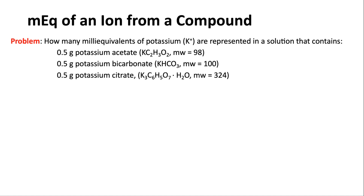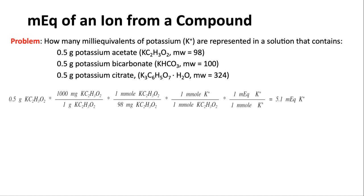Next question involves multiple compounds. How many milliequivalents of potassium are in a solution containing all three of the following: 0.5 g potassium acetate, 0.5 g potassium bicarbonate, and 0.5 g potassium citrate? Notice all three have the same starting weight — will they provide the same milliequivalents? The answer is no, because they differ in molecular weight and in the number of potassium atoms per molecule.